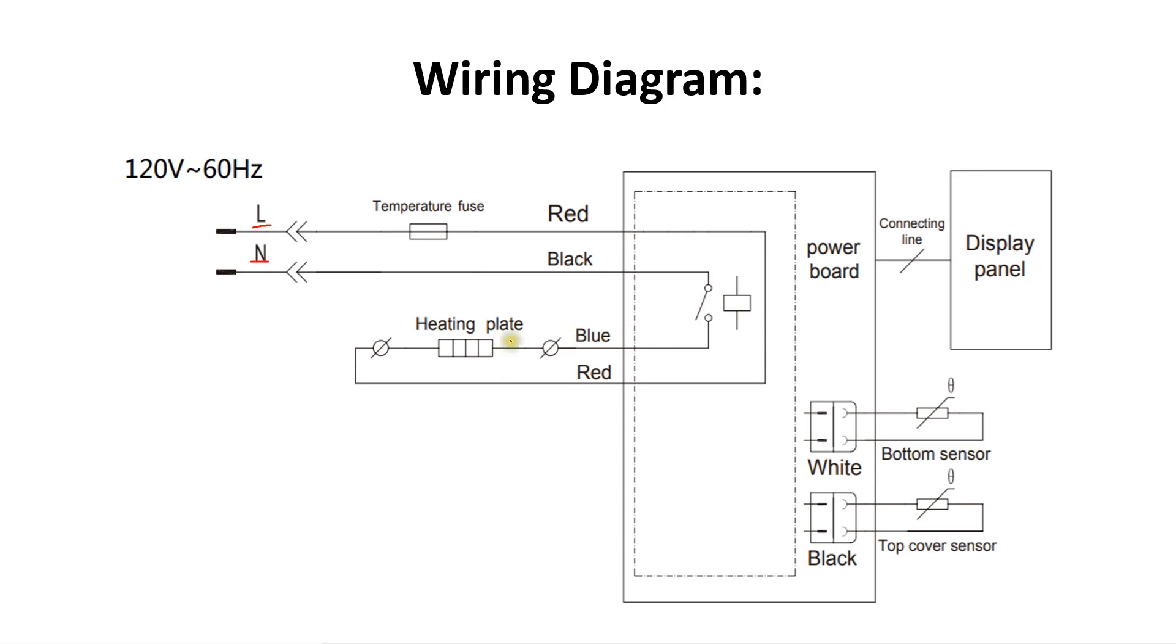This is how the required heat is generated by using the heating plate inside the cooker. Here you can see there are two temperature sensors which are basically NTC temperature sensors.